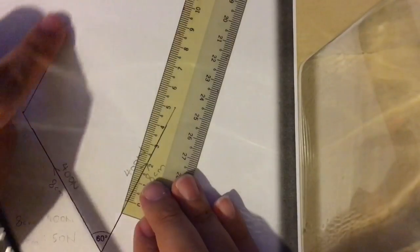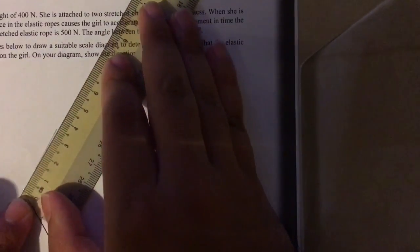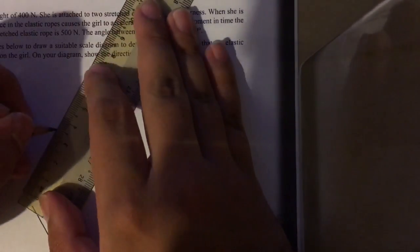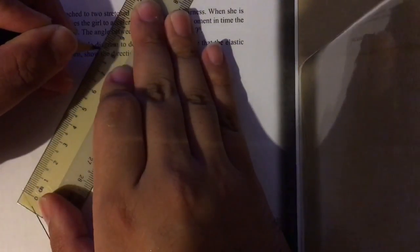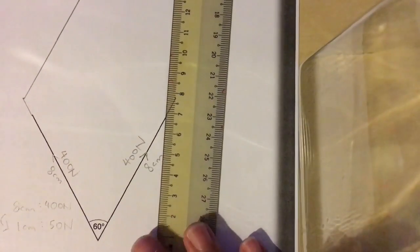This working line has to be 8 cm long as well, which I will now measure and draw an 8 cm long line ending around here. I will now do the same for the other line over here.